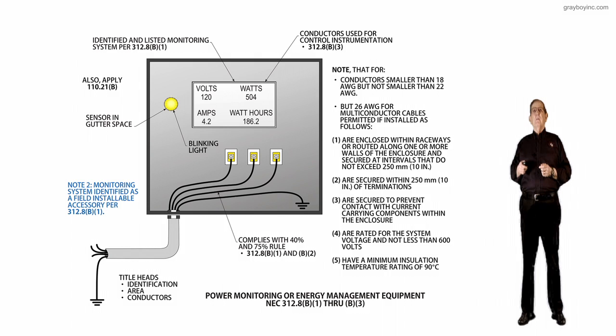I'll identify the listed monitoring system per 312.8 B as in BOI 1. Notice that's right at the left-hand top of the illustration.